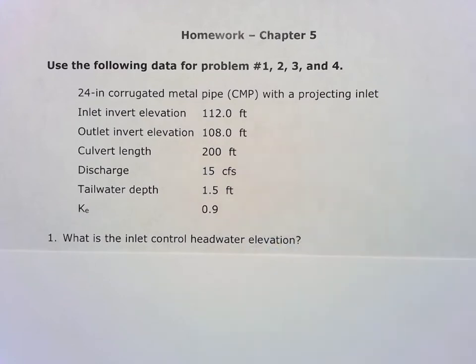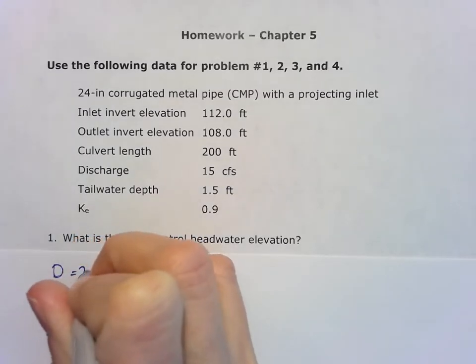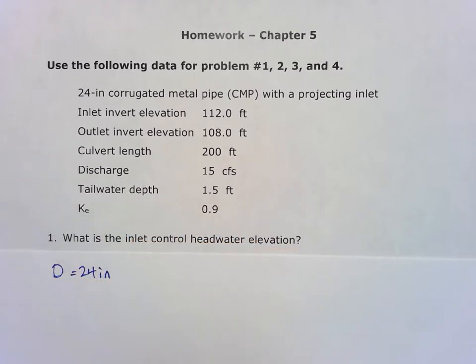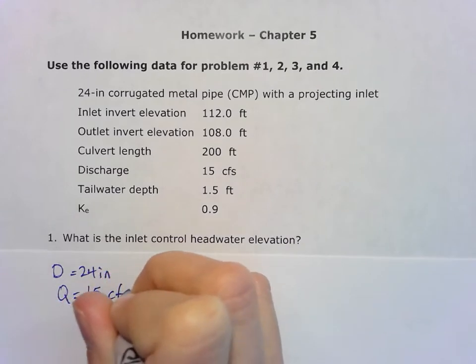That's probably all we need for this. To find the inlet control headwater elevation, we're going to use nomographs from the Bureau of Public Roads from 1963. We know the diameter of the culvert is 24 inches, and the discharge Q is 15 cubic feet per second.